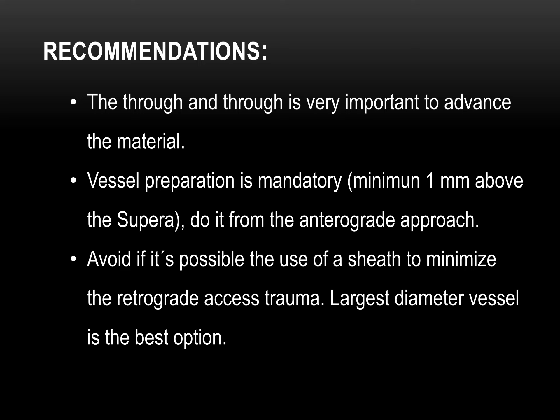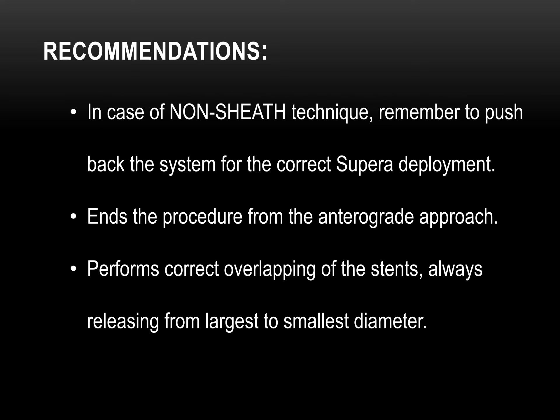Prepare at minimum 1 mm above the suprastent, and do it from the antegrade approach. Avoid if possible the use of a sheath to minimize retrograde access trauma. The largest diameter vessel is the best option. In the no-sheath technique, remember to push back the system for correct suprastent deployment. End the procedure from the antegrade approach. Perform correct overlapping of the stents, always releasing from largest to smallest diameter. Thank you very much.